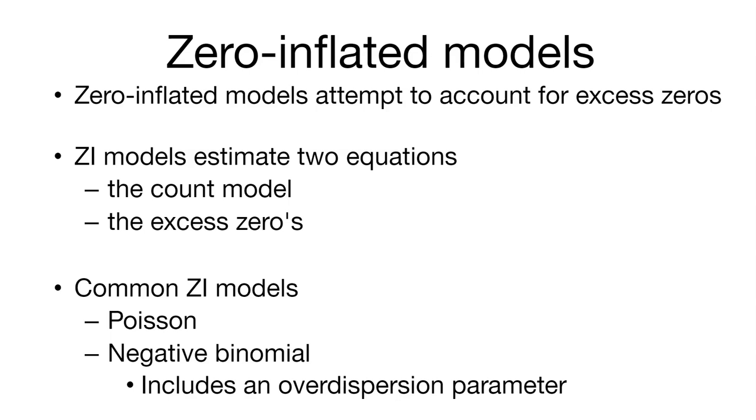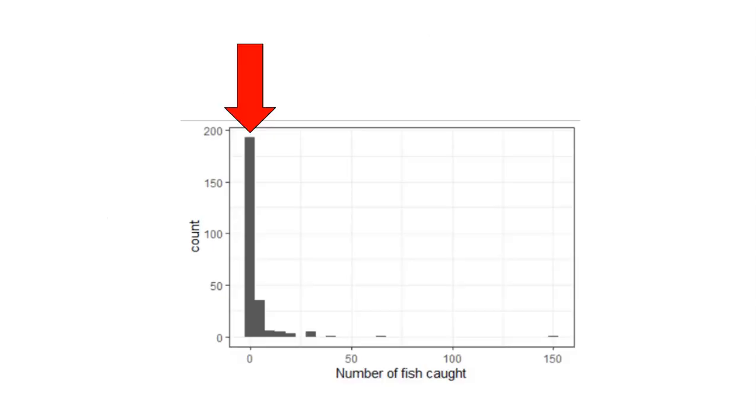This is a good example of how we might be able to look at zero-inflated models in our data. Here's an example going back and looking at the fishing dataset. We have the number of fish caught on the x-axis and the number of times we caught each number of fish on the y-axis.